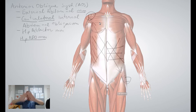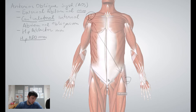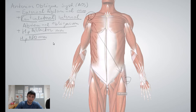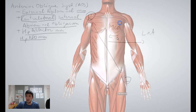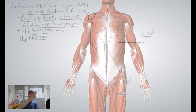Then internal abdominal oblique is upside-down V, then rectus abdominis goes vertically, and below we have transverse abdominis going horizontally. Contralateral internal abdominal oblique and hip adductors — contralateral means on the opposite side. Lateral means away from the center; medial means towards the middle. So this side's shoulder and the other side's hip are contralateral to each other.